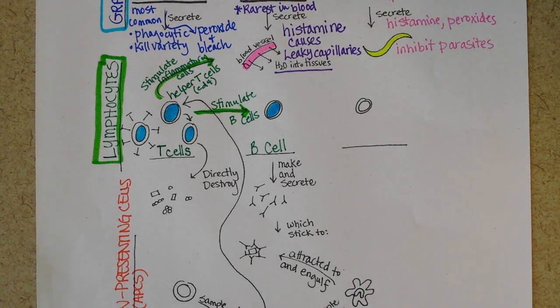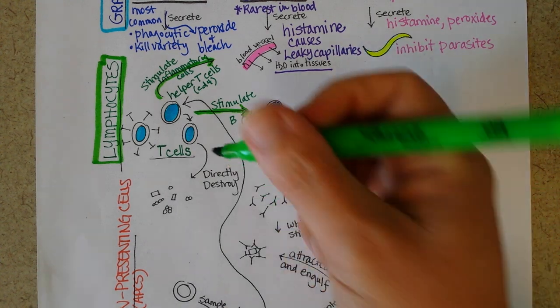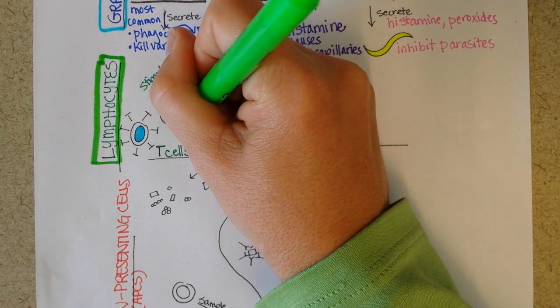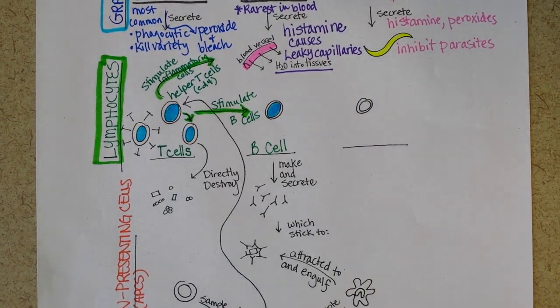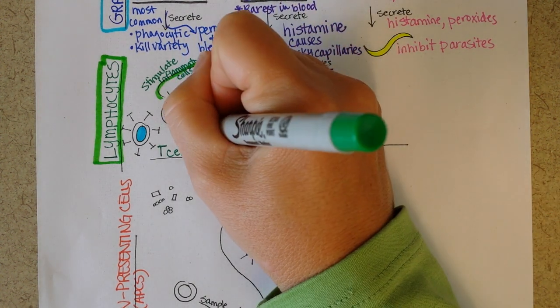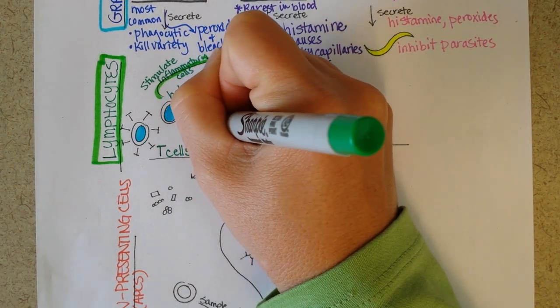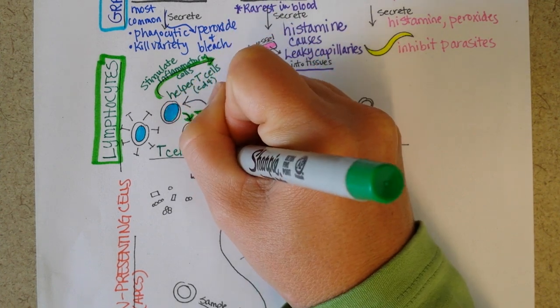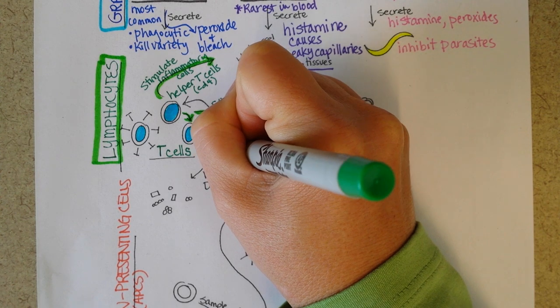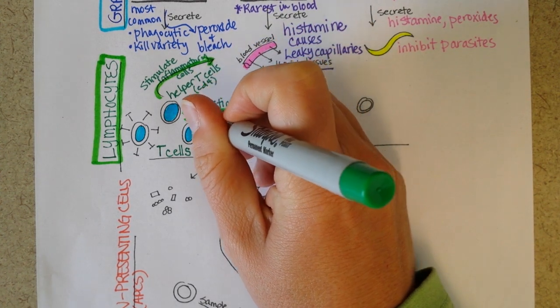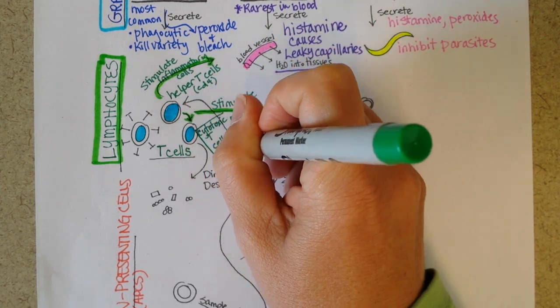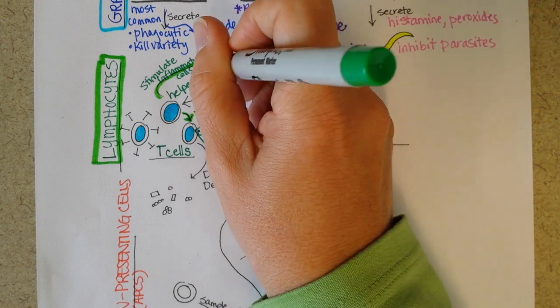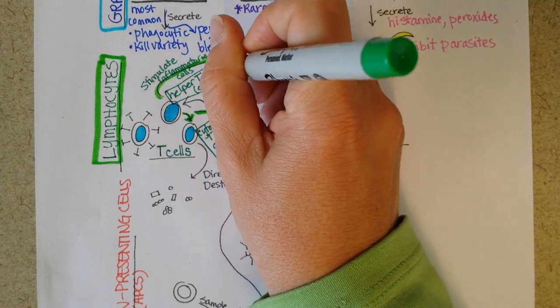And then a third job of a helper T cell is to activate a different kind of T cell called a cytotoxic T cell or CD8. So if we were to talk about the different kinds of T cells, there's CD8 cells and there's helper T cells.